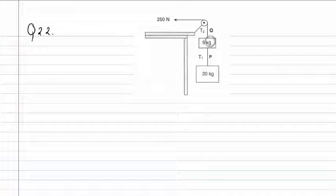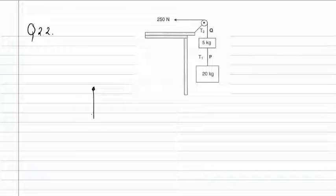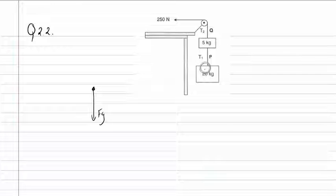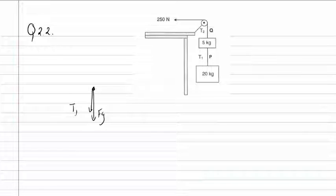Let's take a look at where we find our five kilogram object. We notice it's going to have gravitational force, like all objects, working straight down. You'll also notice that the piece of string connecting the five and the twenty kilogram object makes the twenty kilogram hang downwards, pulling downwards on the five kilogram object — this is T1.